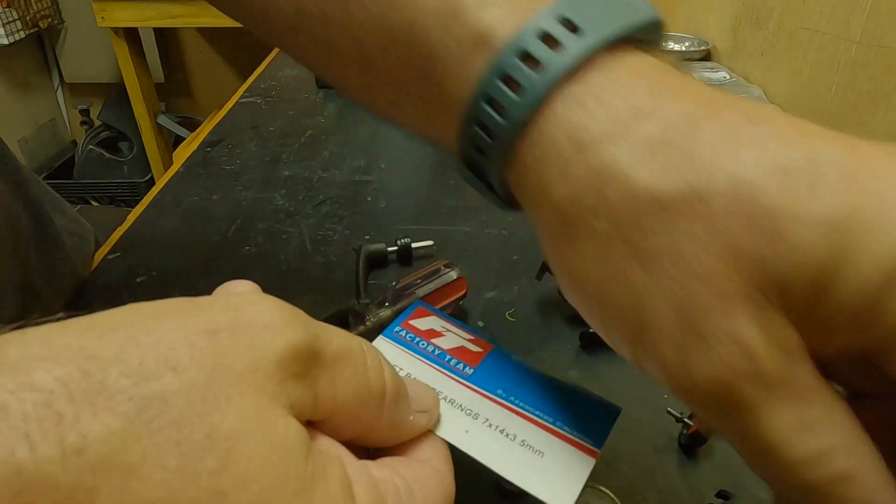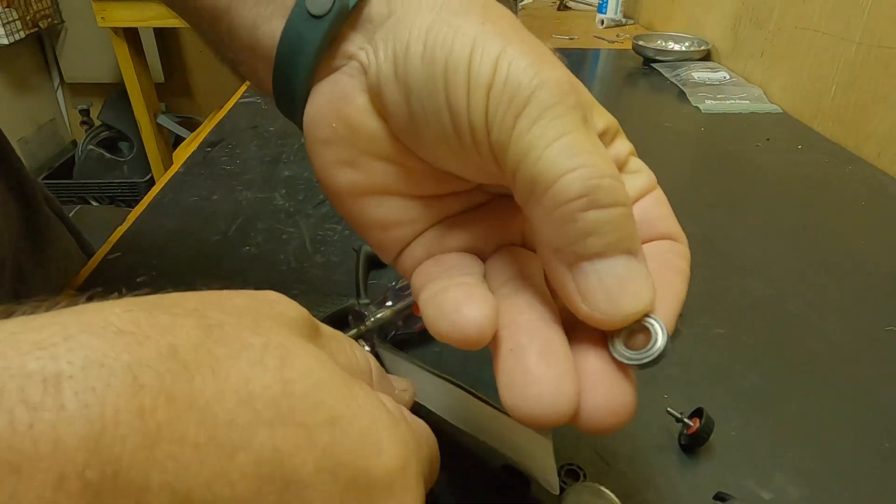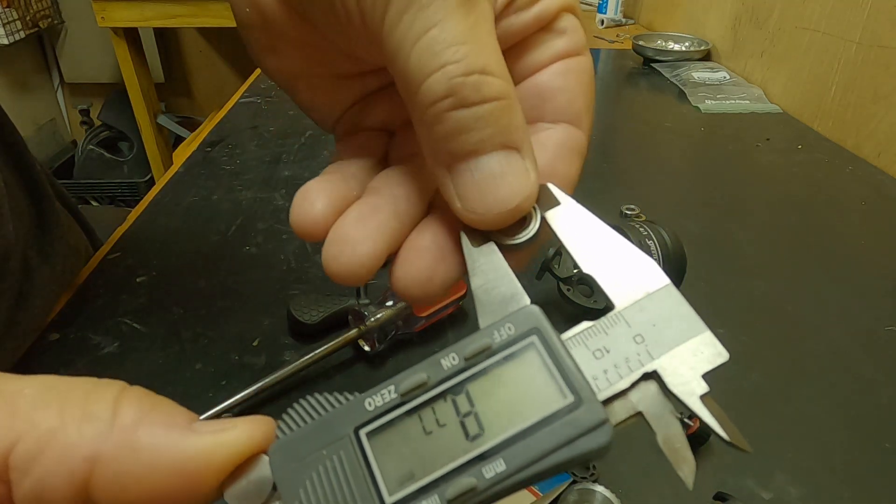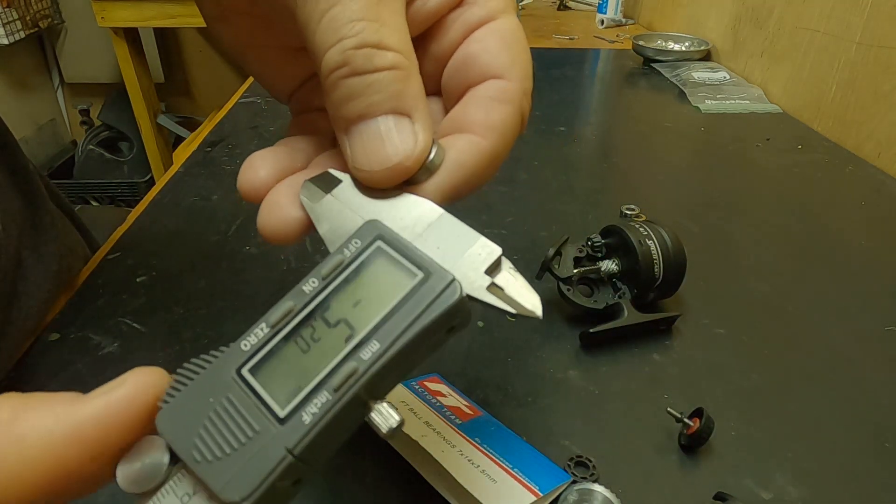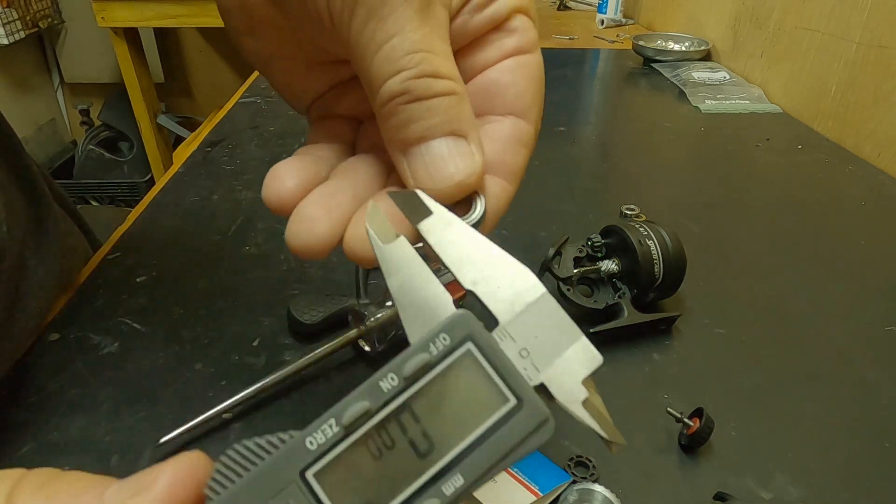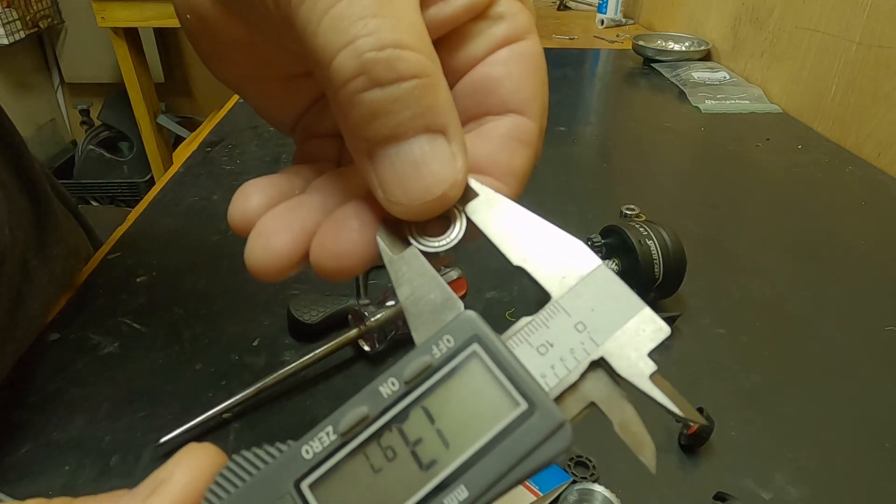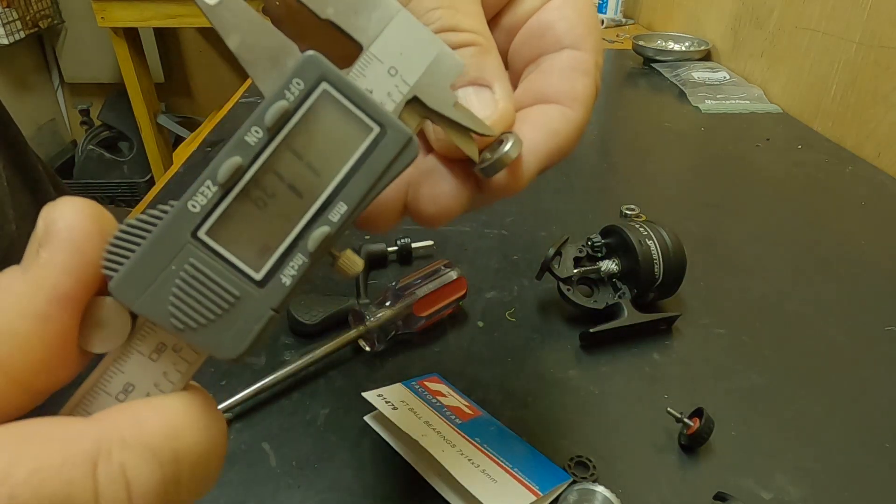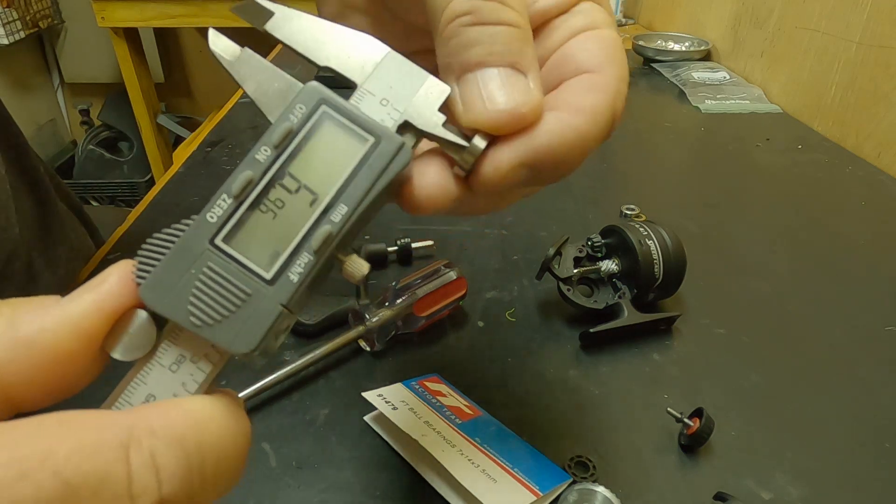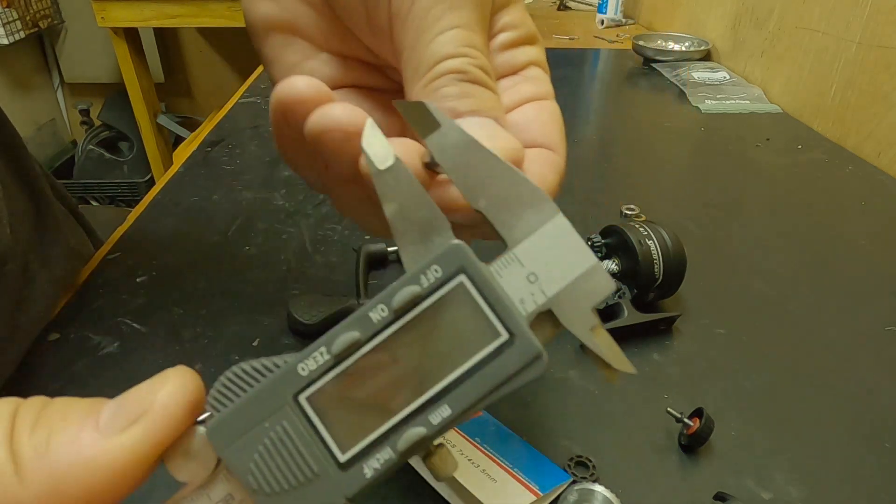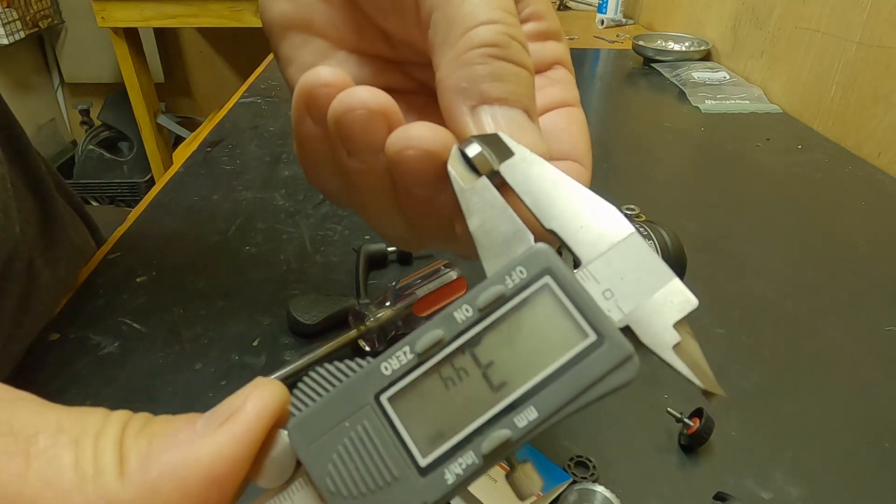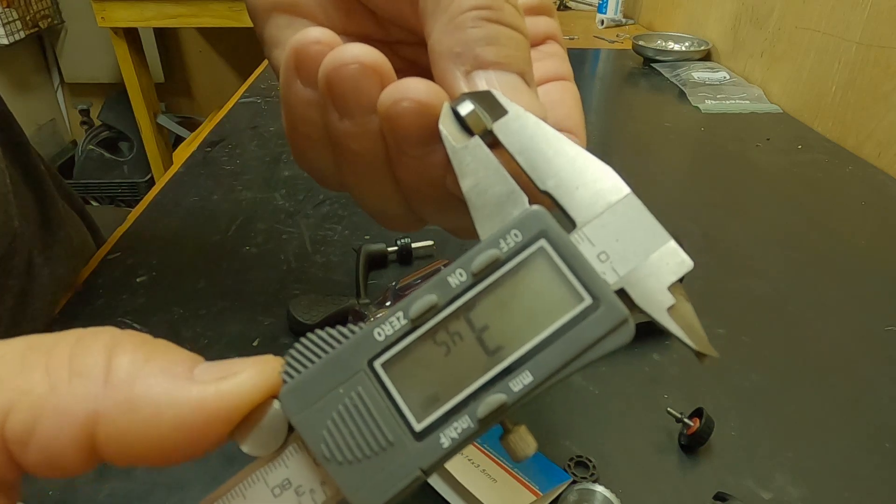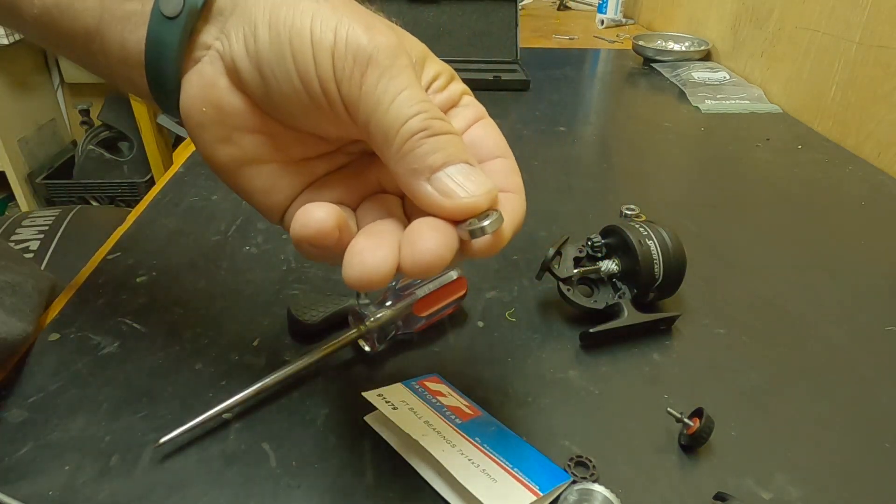So these are the bearings that I got, right here. Do a quick measurement to make sure they match: 14, 7, and 3.5.